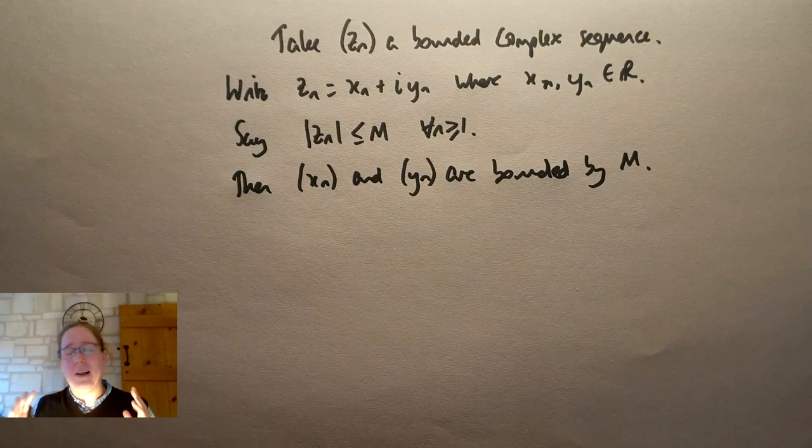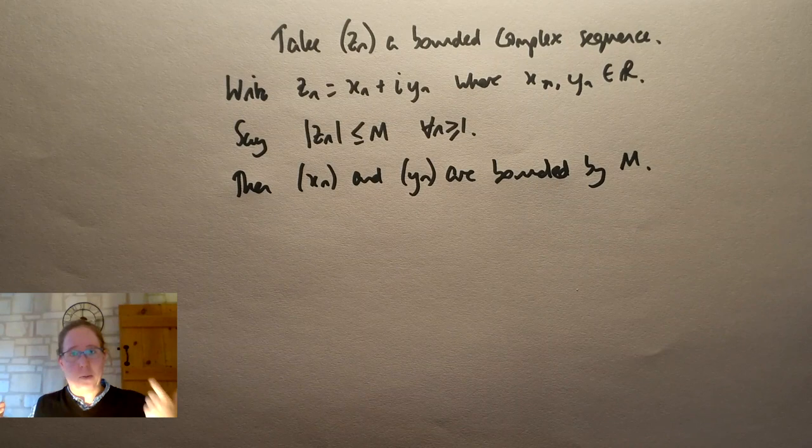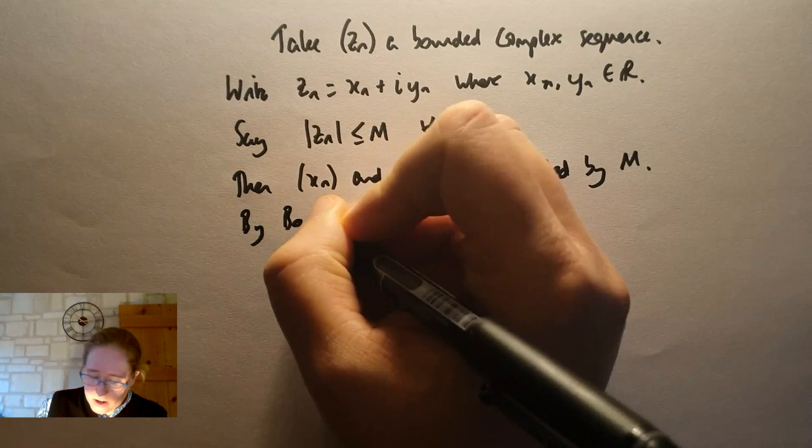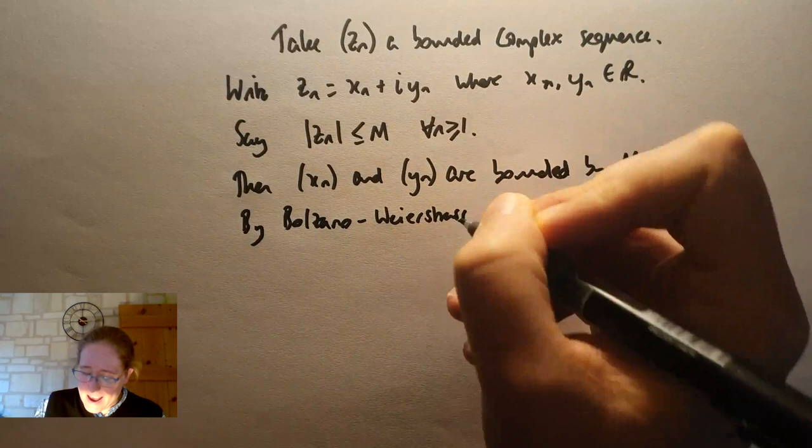That actually goes back to something that we did, it feels like a long time ago now, in the complex numbers course, where we commented that when we looked at the definition of the modulus, we could see if the modulus of a complex number is at most m, then the modulus of the real part and the modulus of the imaginary part are each at most m. Okay, so x_n and y_n, these sequences, they're bounded by m and they're real. So by Bolzano-Weierstrass, let's just focus on one at a time here, because the plan is to kind of reduce repeatedly to the subsequences.